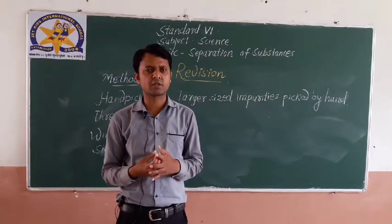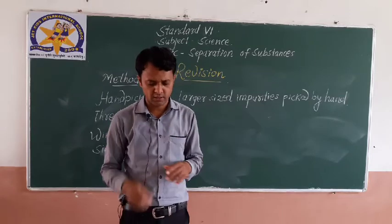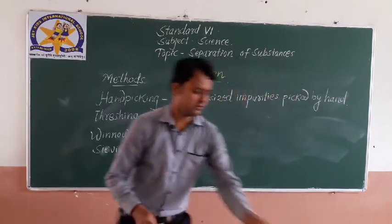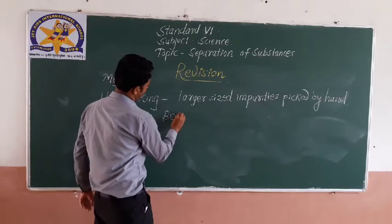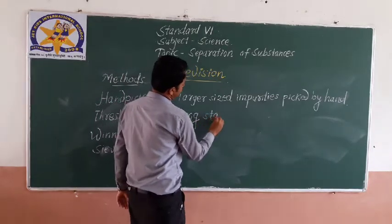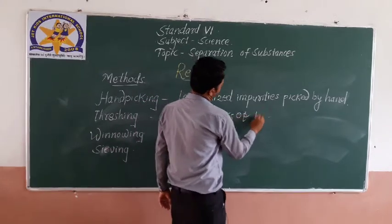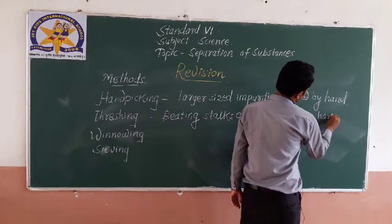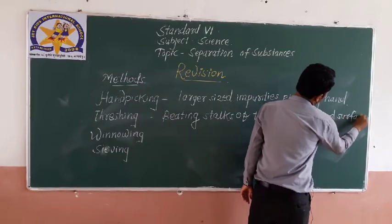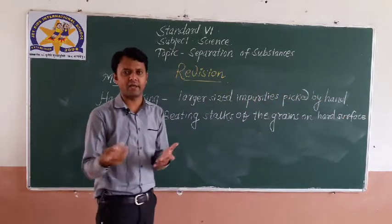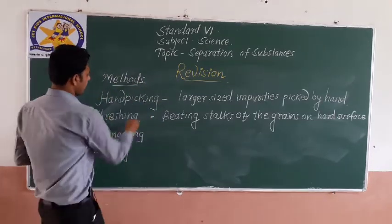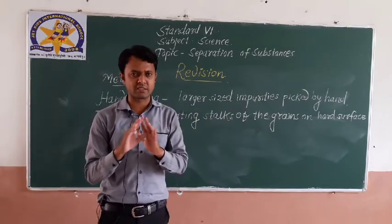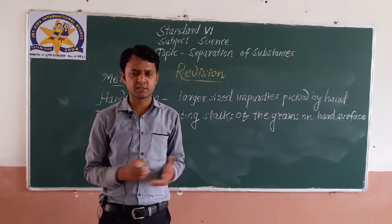Next is threshing. Threshing is nothing but when the farmer beats the stalks of the grains on a harder surface to make the stalks and the grains separate. This is the method used by farmers.